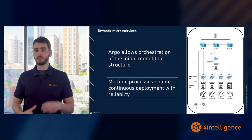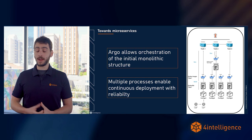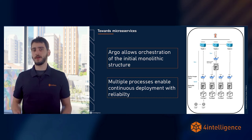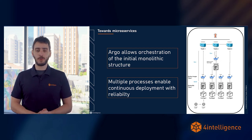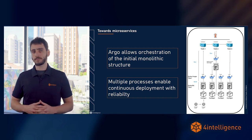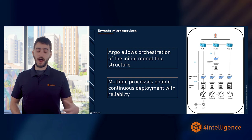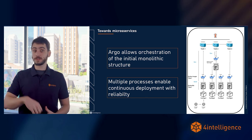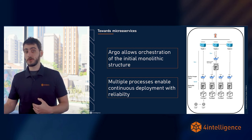One of the biggest accomplishments Argo brings is that it allows us to move toward a microservice approach, plugging in more and more applications and making the pipeline much less language-dependent. We started everything in R, and now we have machine learning and deep learning models in Python — all working together in Argo to build a pipeline that brings the best of both worlds: the best R can provide and the best Python can provide, with the latest implementations and newest solutions. It also allows multiple processes with continuous deployment and continuous integration with much more reliability.